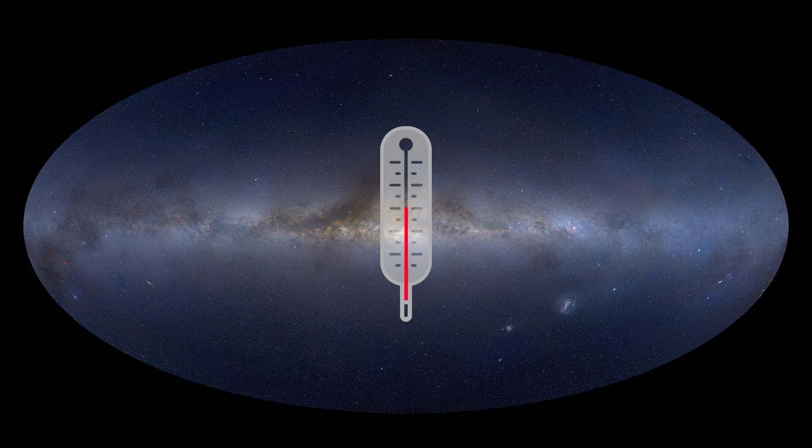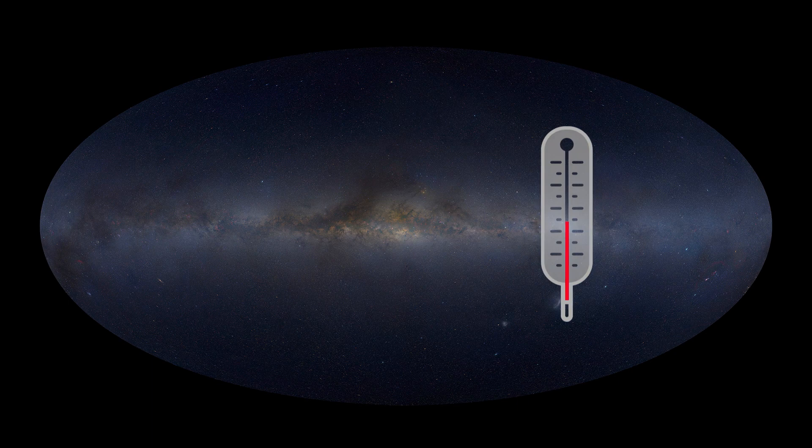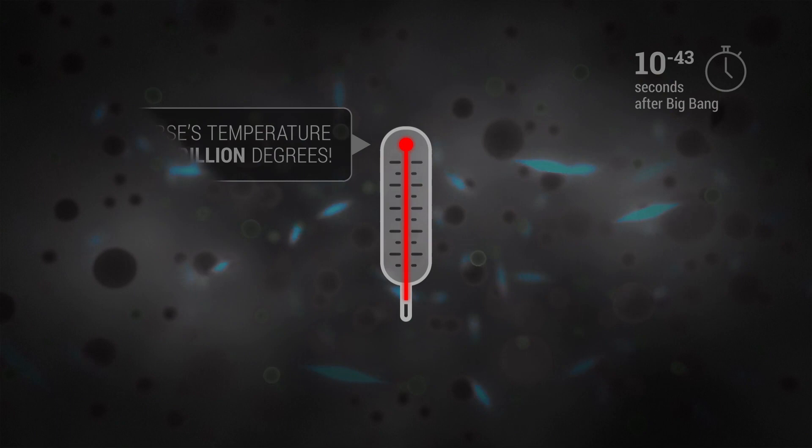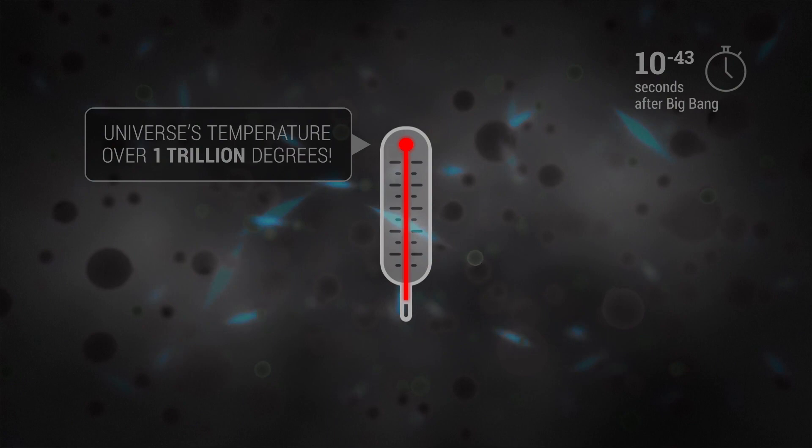Taking the universe's temperature shows us the density and energy of the universe at that time and place. When the universe was first born, it was dense and hot. In these cramped and heated conditions, particles of light and matter were rushing around, continuously running into each other.